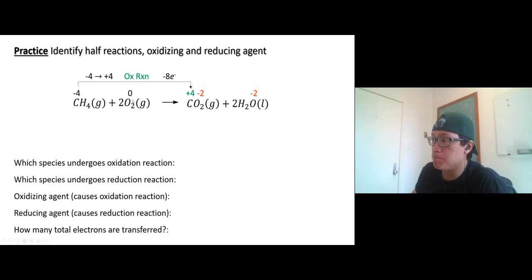Now oxygen, from zero to negative two. It becomes the oxygen in carbon dioxide and becomes oxygen in water, but it's all the same oxygen anyway. From zero to negative two, the oxidation number is decreasing, so we call it reduction reaction. Each oxygen gains two electrons. There are four total, so that's eight.